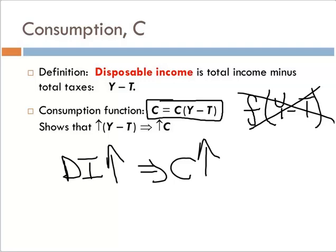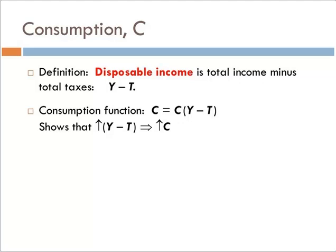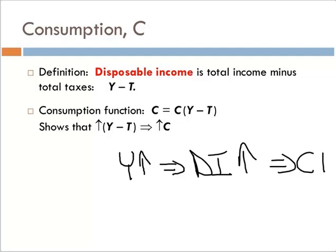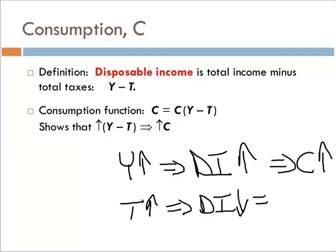That makes perfect sense. If Y goes up, then disposable income goes up, and therefore consumption goes up. What happens if taxes go up? Well, since we're subtracting taxes, disposable income goes down, which means consumption goes down. So we can now deal with the effects of income increases — business cycle fluctuations on consumption — and we can look at fiscal policy questions: what happens when we change taxes and what effect does that have on consumption?